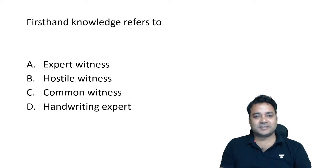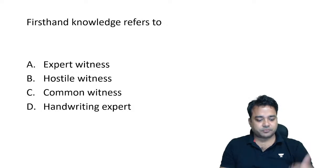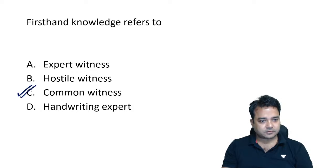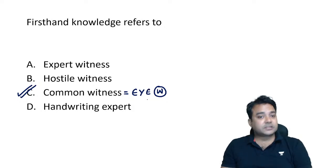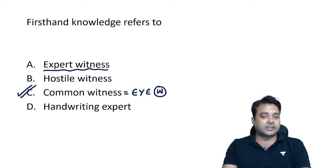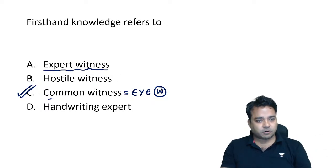Now let us come to the next question. First-hand knowledge refers to which type of witness? First-hand knowledge refers to common witnesses — a person who has seen the crime occurring, also called an eyewitness. During autopsy, with expertise, I look over injuries, find the cause of death and time since death — making me an expert witness, but I don't have first-hand knowledge. First-hand knowledge always resides with common witnesses.